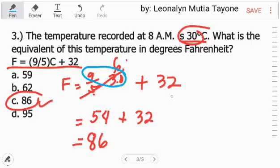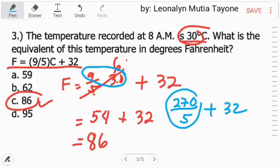Or, i-multiply mo yan. That is 270. So, 270 divided by 5. 270 divided by 5 plus 32. 270 divided by 5 that is 54. 54 plus 32 is equals to 86.